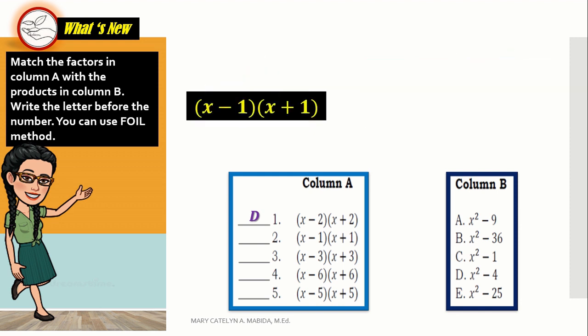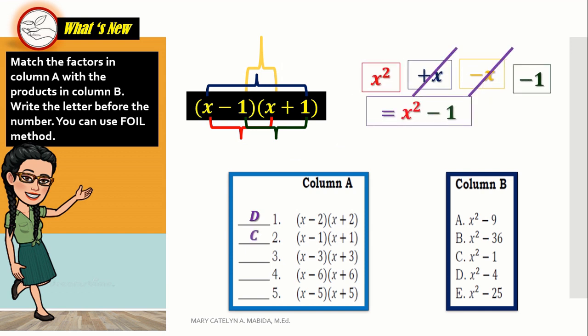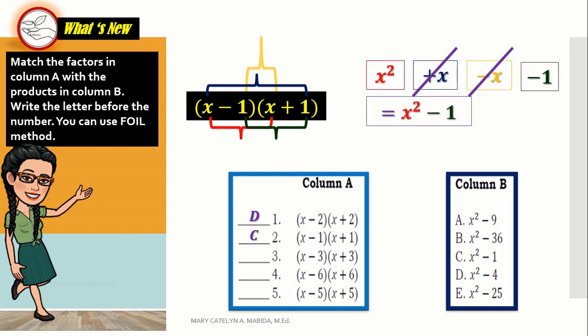Let's go to number 2. The quantity of x minus 1 times the quantity of x plus 1. Using the FOIL method and combining like terms, the answer is x squared minus 1. Good job!